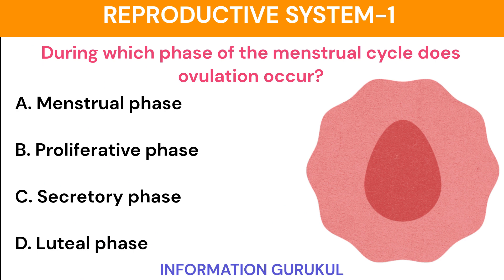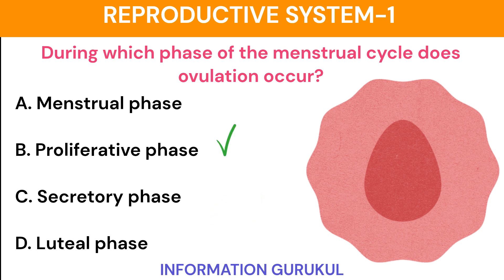During which phase of the menstrual cycle does ovulation occur? Proliferative phase.